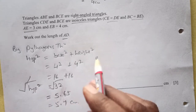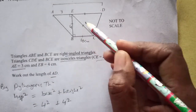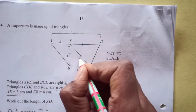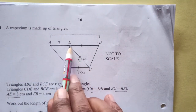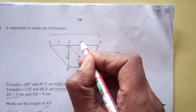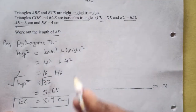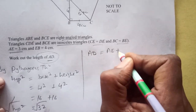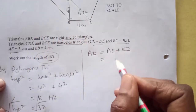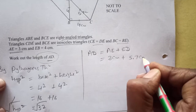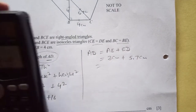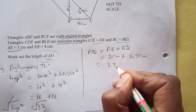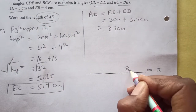So EC is 5.7 cm. Now triangle CDE is also an isosceles triangle, so ED equals EC, which is 5.7 cm. AD = AE + ED. AE is 3 cm and ED is 5.7 cm. So 3 plus 5.7 equals 8.7 cm. So our answer is 8.7 centimetres.